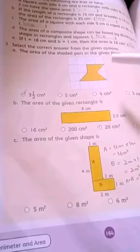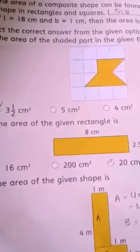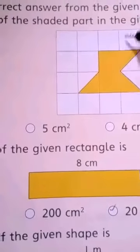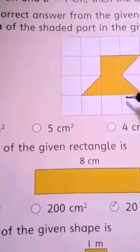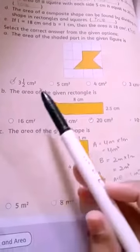Question number 3: select the correct answer from the given options. The area of the shaded part in the given figure — we can see two squares: one full and one full, plus two halves. Half and half makes one, so total is 3 and a half squares. The correct answer is 3 and a half cm square.